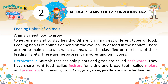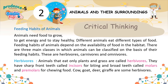Herbivores. Animals that eat only plants and grass are called herbivores. They have sharp front teeth called incisors for biting and broad teeth called molars and premolars for chewing food. Cows, goat, deer, and giraffe are some herbivores. Critical thinking: Shark's teeth are modified scales.